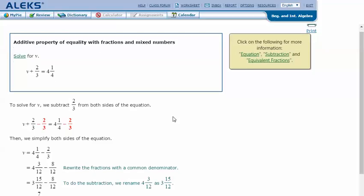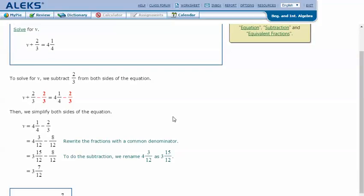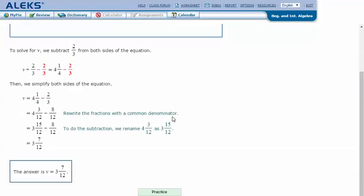To solve for V, we subtract two-thirds from both sides of the equation. Plus two-thirds, subtracting two-thirds gets rid of those, so I just have V by itself on the left. If I subtract two-thirds on one side, I need to subtract two-thirds on the other side to keep it equal. Now V equals four and one-fourth minus two-thirds.